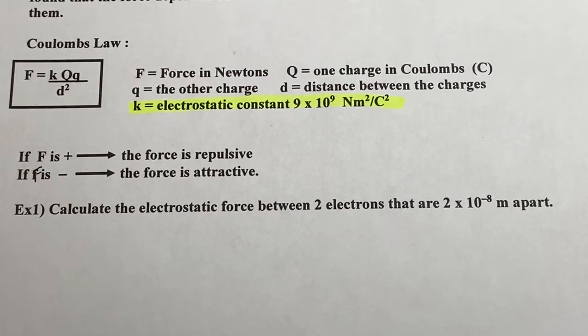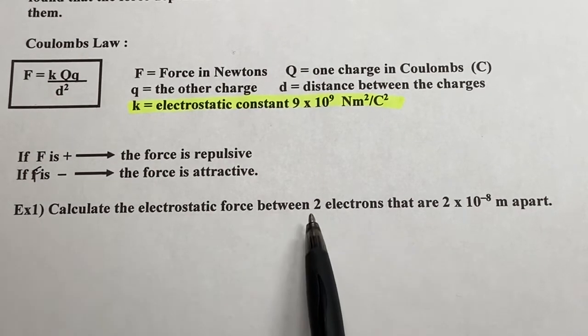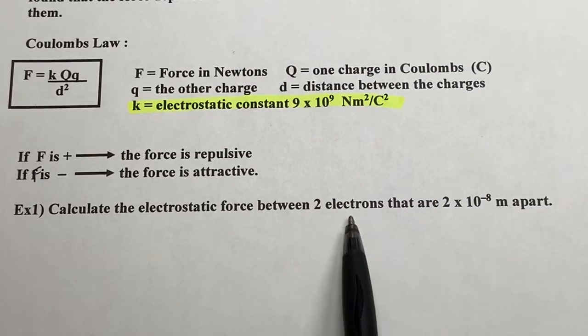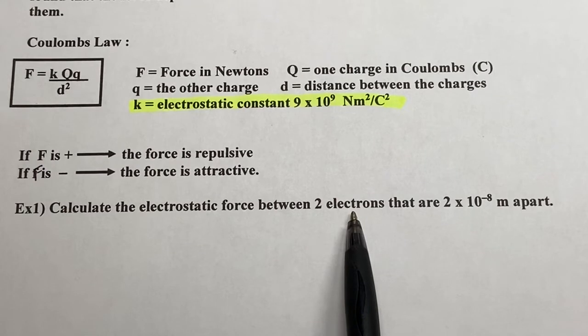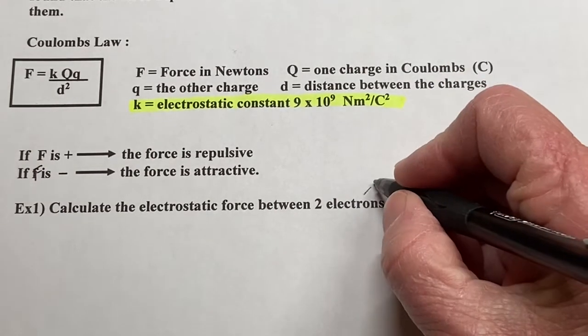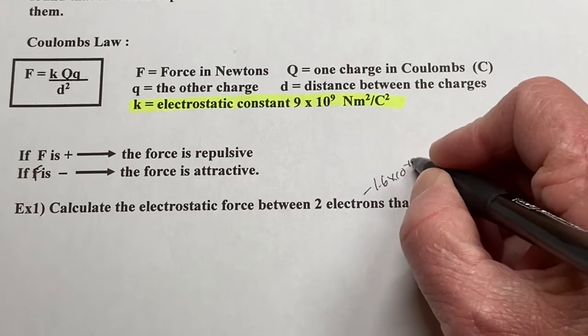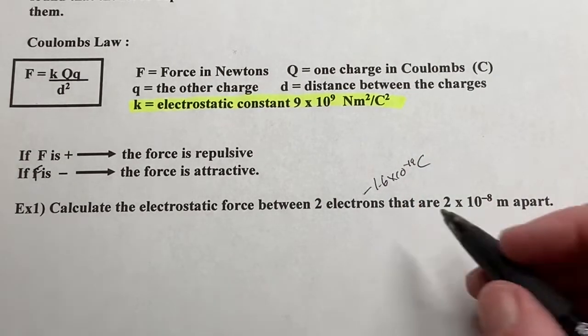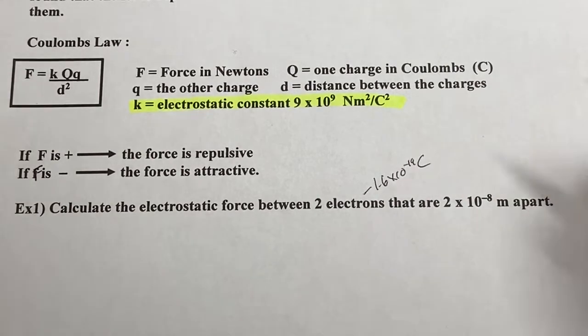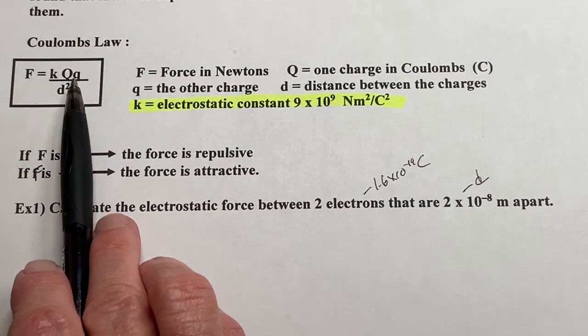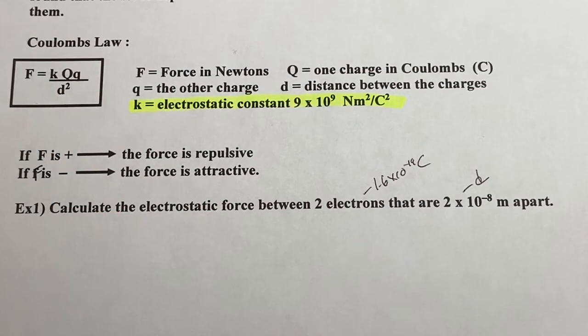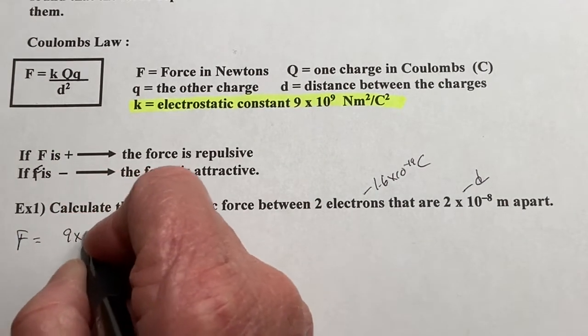Alright, let's go into the first practice problem here. Grab your calculator. So I have a force. I want to know the force between two electrons. Well, you have to know the charge of the electron. You may have to go back to your previous notes. Remember, an electron is negative 1.6 times 10 to the negative 19th coulombs. And they are 2 times 10 to the negative 8th. We're talking atomic sizes here, so obviously this is small, and this is a distance. So Q and Q are electrons. K is the constant. D is the squared. D is the distance. Let's figure it out. So F equals 9 times 10 to the 9th.